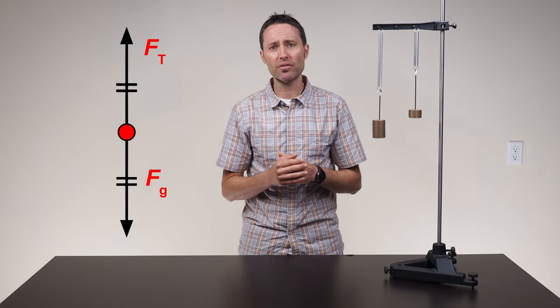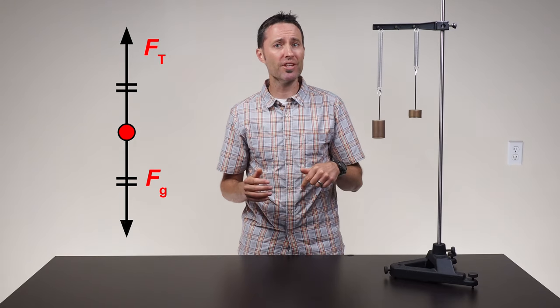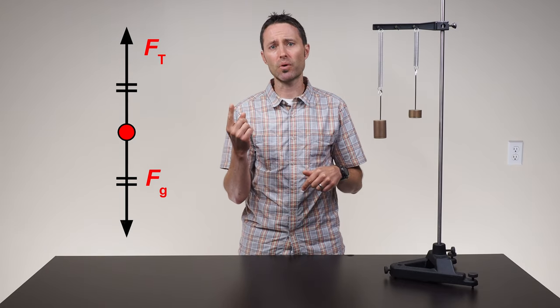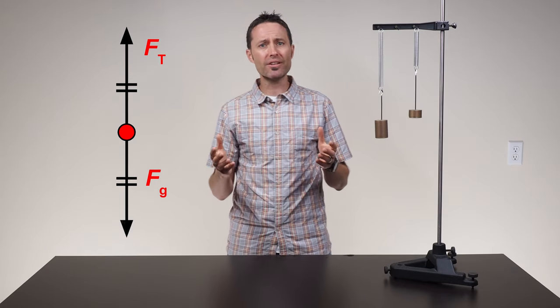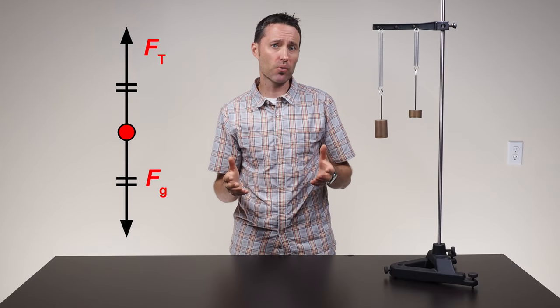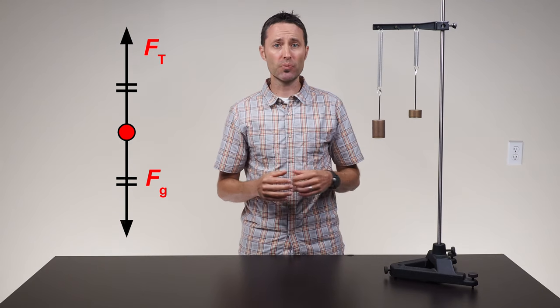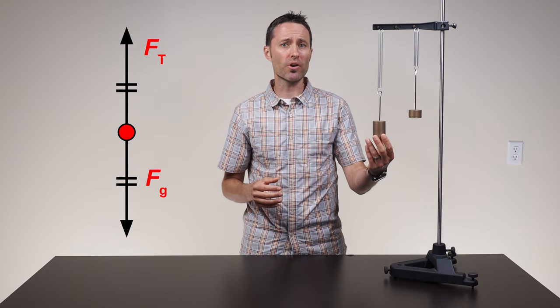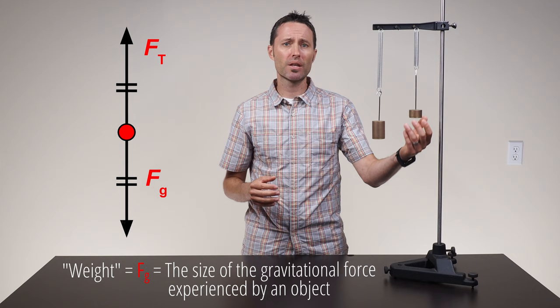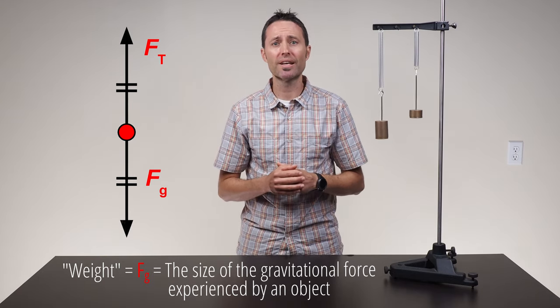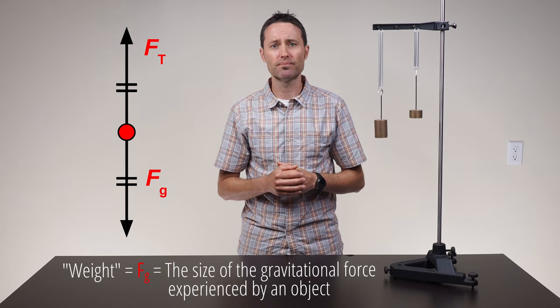Since the hanging object is at rest, the gravitational force is equal in size to this larger tension force. Even though we can't directly see the size of the gravitational forces on each of the hanging objects, we can conclude that one of the objects is experiencing a larger gravitational force than the other. Remind the students that the word weight refers to the size of the gravitational force experienced by an object. Ask the students what they think causes one of the objects to have a larger weight or feel a larger gravitational force of attraction than the other.